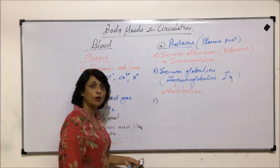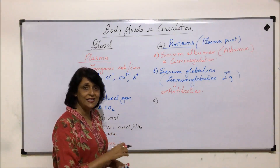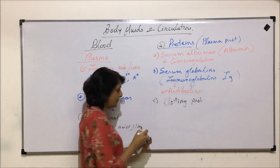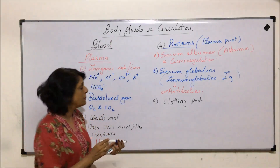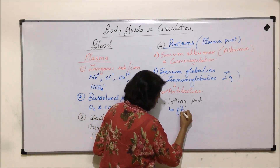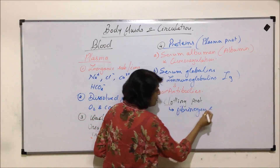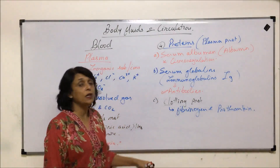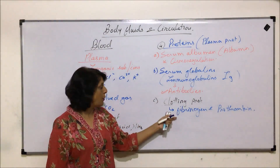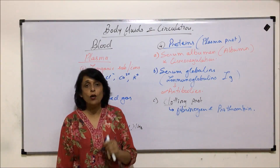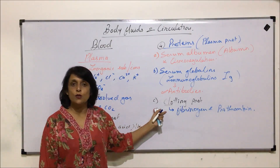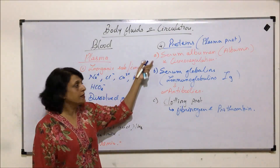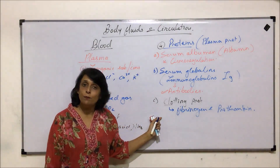The next category of proteins can be grouped as clotting proteins. As the name tells us, these proteins help in blood clotting, and they include fibrinogen and prothrombin. Both fibrinogen and prothrombin are responsible for blood clotting whenever there is a cut or an injury. We will study the process of coagulation later on.